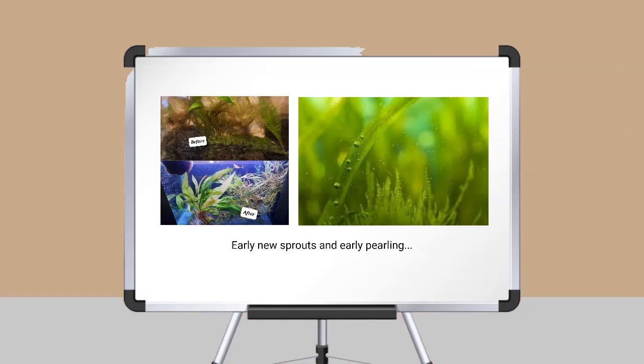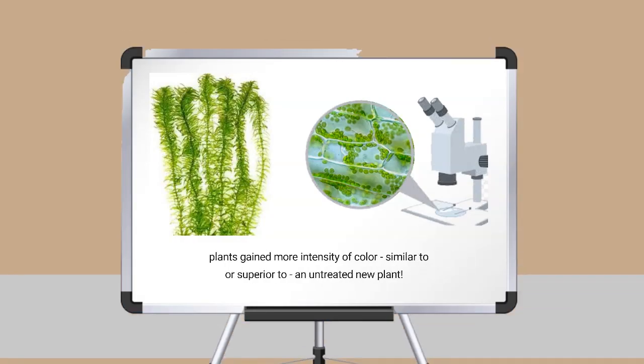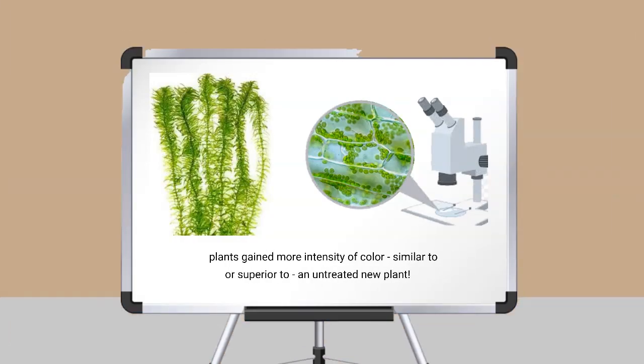Plants grew early new sprouts and experienced early pearling, when a plant generates oxygen and starts to form bubbles resembling pearls in the water. And plants gained more intensity of color, similar to or superior to an untreated new plant.